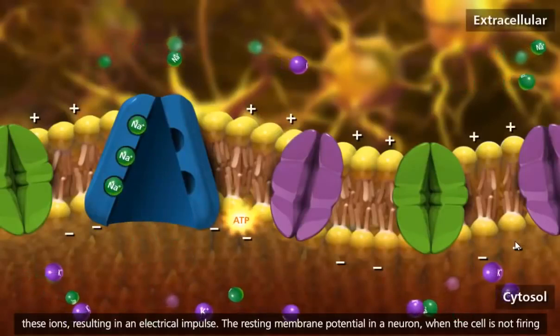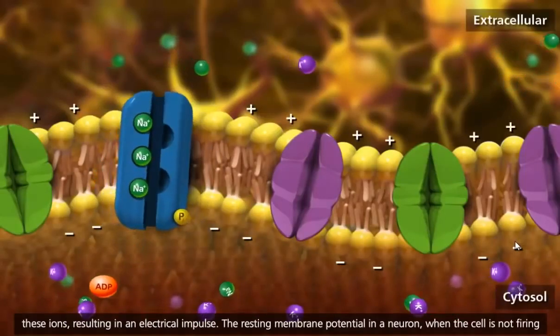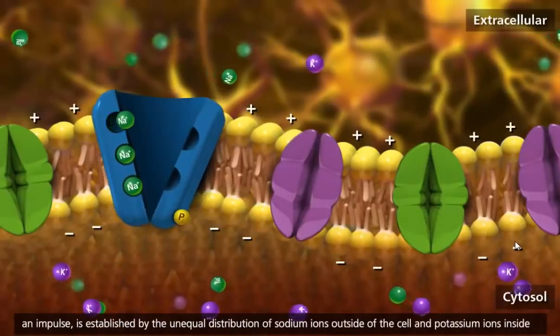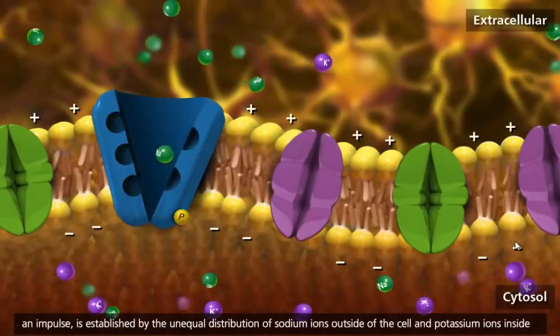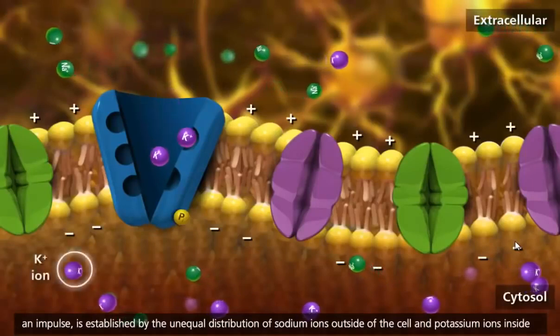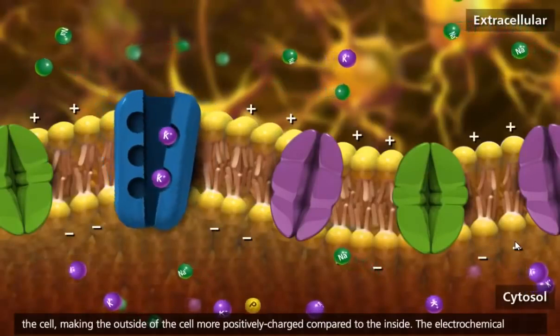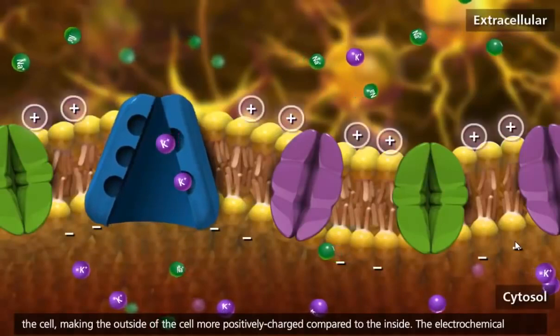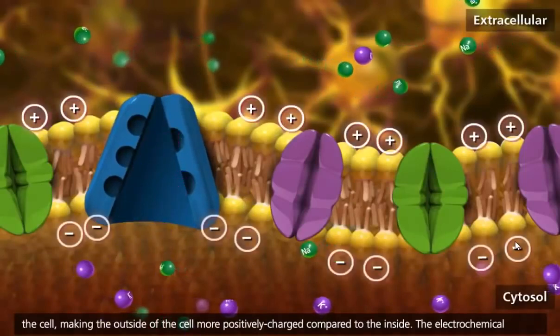The resting membrane potential in a neuron, when the cell is not firing an impulse, is established by the unequal distribution of sodium ions outside of the cell and potassium ions inside the cell, making the outside of the cell more positively charged compared to the inside.